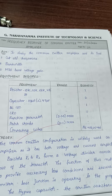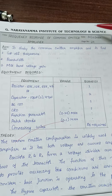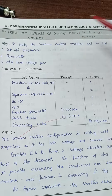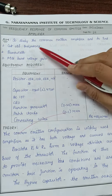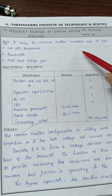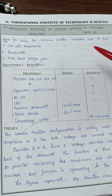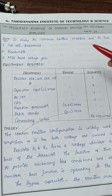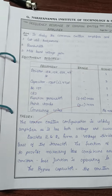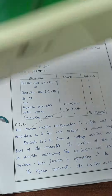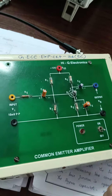Hello everyone. In this video I am going to explain the frequency response of common emitter amplifier experiment. The aim of this experiment is to study the common emitter amplifier and to find the cutoff frequencies, bandwidth, and mid-band voltage. The key equipment required is a common emitter amplifier trainer kit.